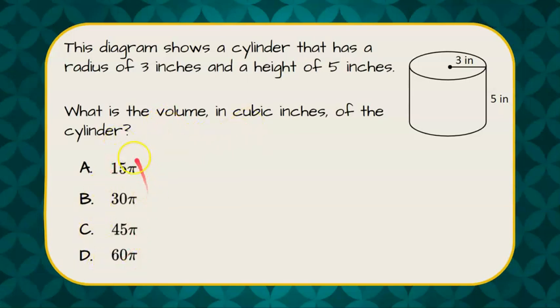First, identifying that all our answers are in terms of pi. We're finding the volume of a cylinder, which uses the formula volume equals pi r squared times h. The area of the base, which is a circle, so pi r squared times the height.